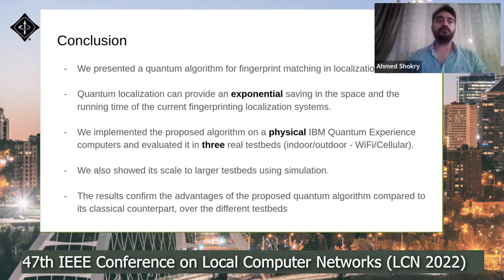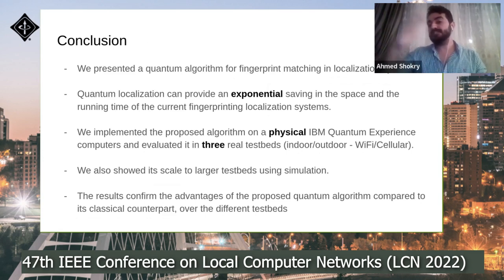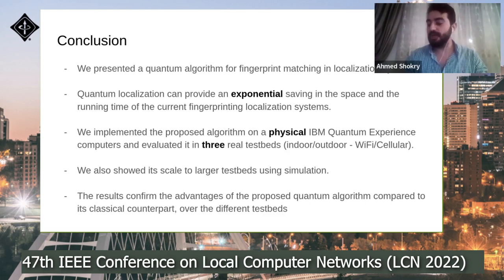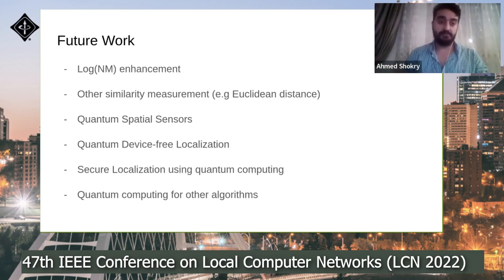In conclusion, we presented a quantum algorithm for fingerprinting matching in localization systems. Our quantum algorithm provides an exponential saving in both space and running time of the current fingerprinting localization system. We implemented it on a physical IBM Quantum Experience machine and evaluated it in three real test beds covering different scenarios and technologies. We also showed that our algorithm can scale to larger test beds using simulation, confirming the advantages of the proposed approach.